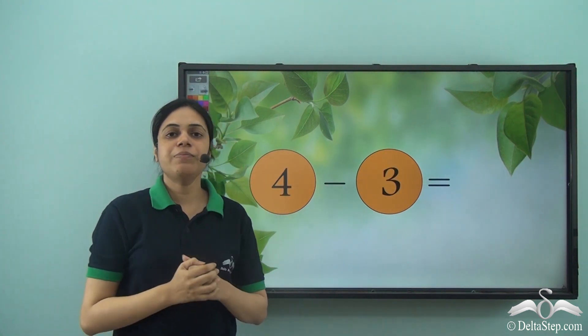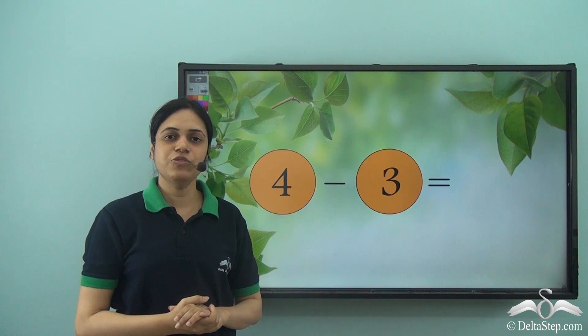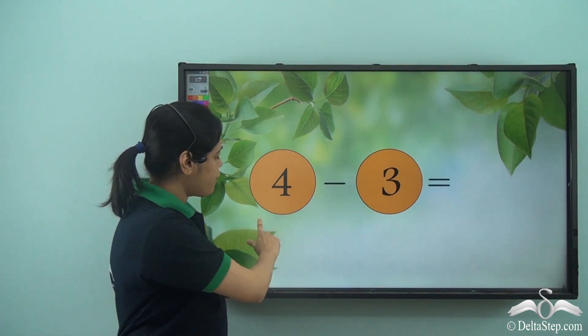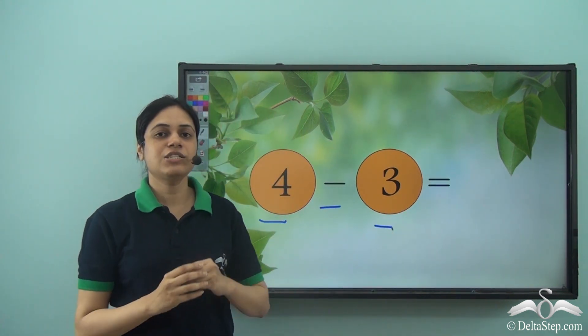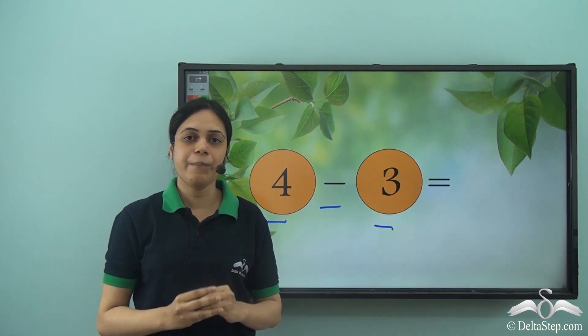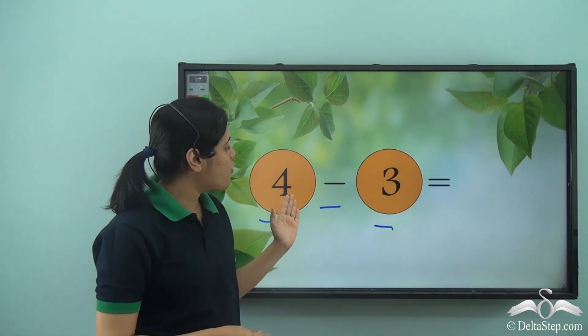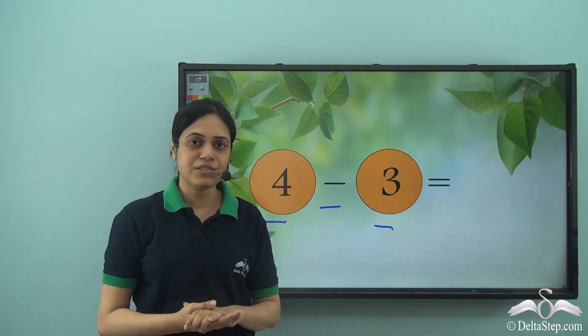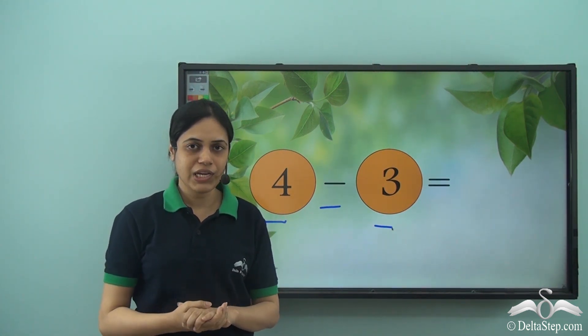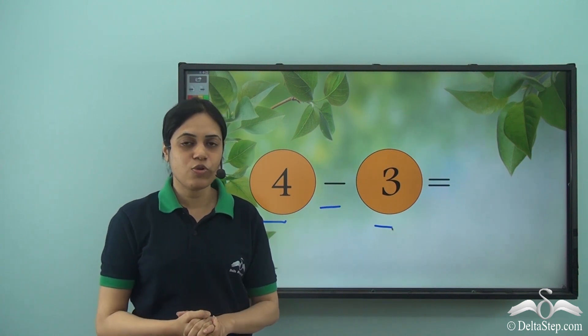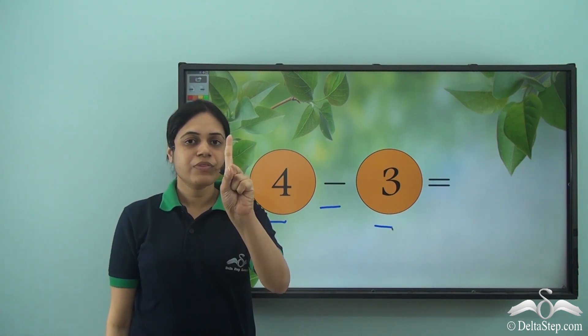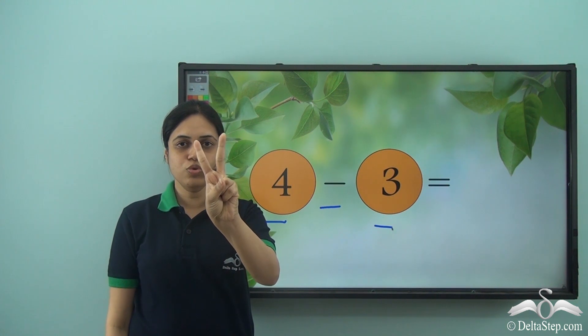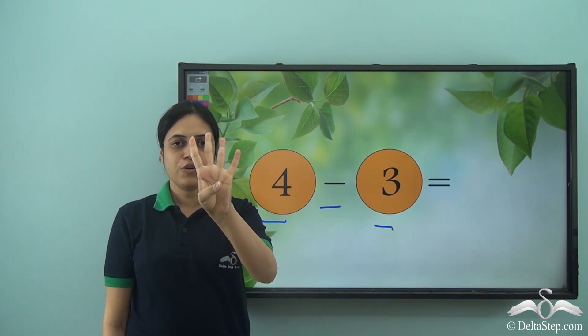Let's try and perform this subtraction using fingers. So four minus three. Just pure and simple numbers. No objects. Four minus three. So first I will open how many fingers? Four fingers. Right? So first let us open four fingers. One, two, three, four. I have opened four fingers.